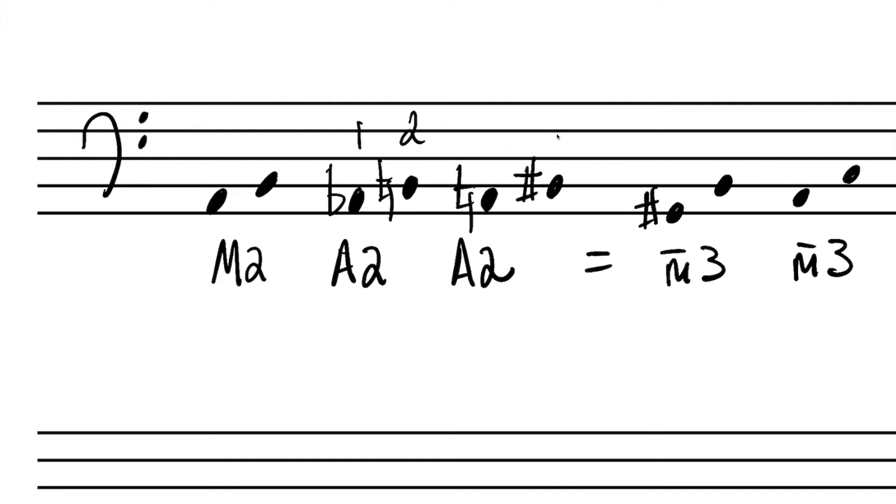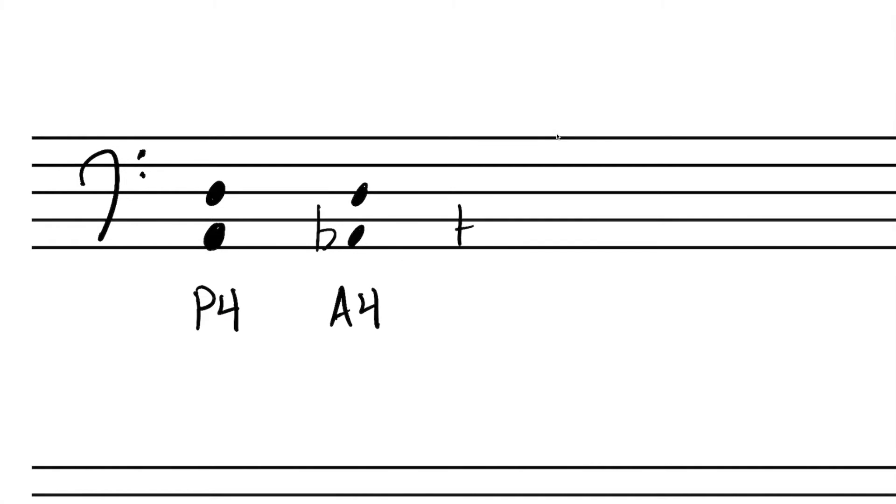Do you remember the perfect fourth above A? It's D, because D is scale degree four in the A major scale — we derive any perfect interval from the corresponding major scale given the lower note is the tonic. So A to D is a perfect fourth. To make this an augmented fourth, we can either lower the bottom note by a half step, making it A-flat to D, or keep A-natural and raise the top note to D-sharp. Either way, we get an augmented fourth.